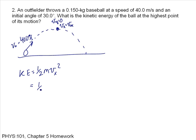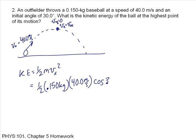That's one-half times the mass, which is 0.15 kilograms, times vx, which is v-naught cosine of theta — that is 40.0 meters per second times the cosine of 30 degrees — and this whole term, v-naught-x, is squared. That gives me 90 joules.